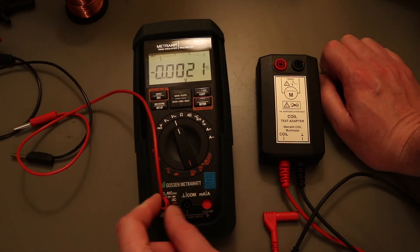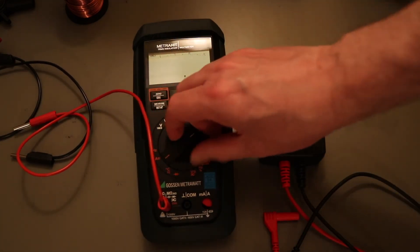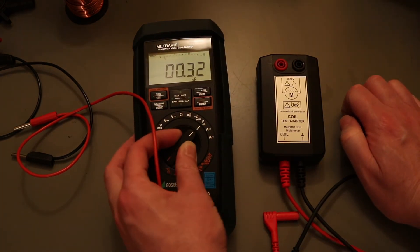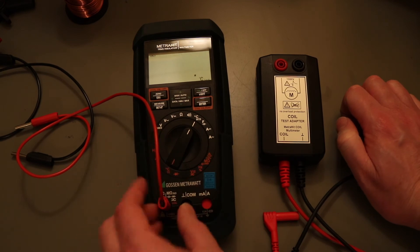Also if I have a test lead in the voltage, then when I try and go round I can't actually switch this round to the amps function. It won't let me. It physically won't let me.